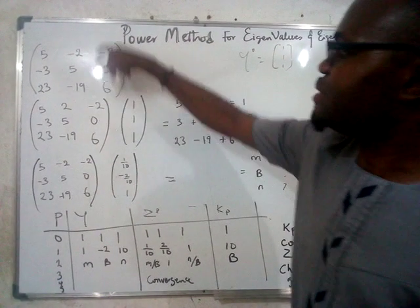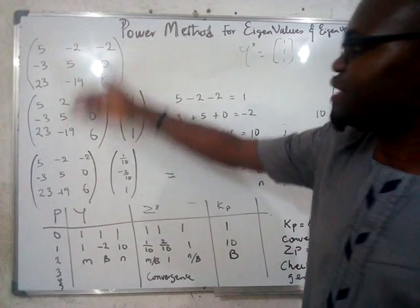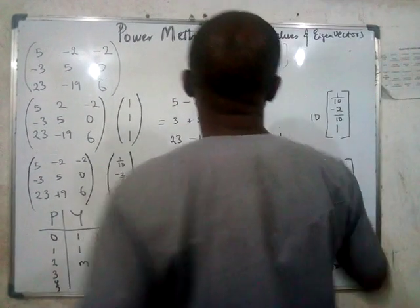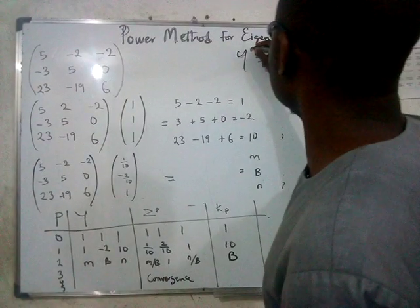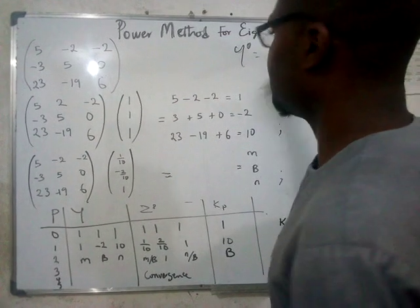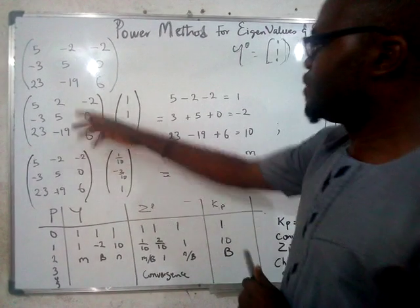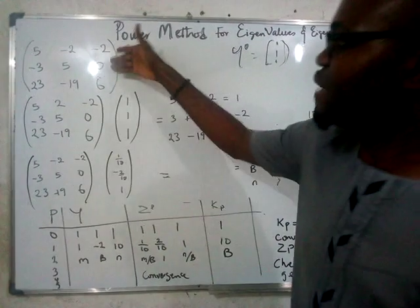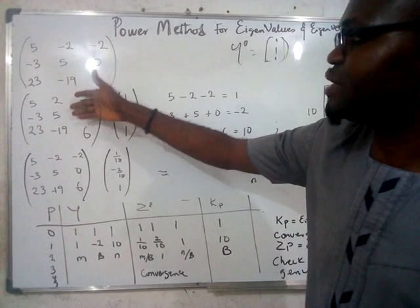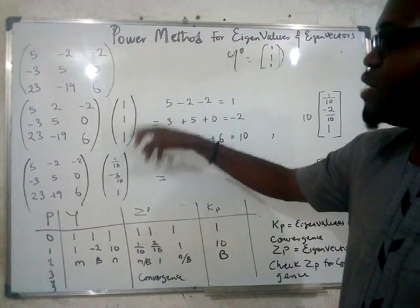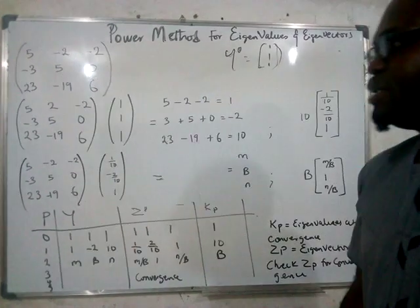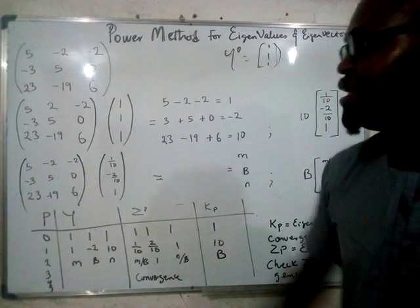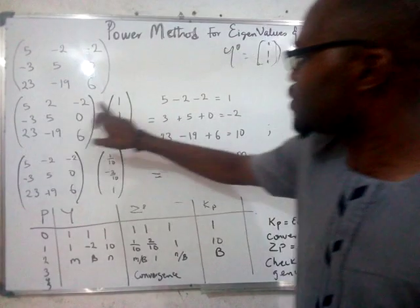...minus two. With this very matrix, the first thing you do is write the same matrix and assume initial y values. The initial y values we are assuming is one, one, one, one, one, one, so that we can multiply out to get values from our iterations. Write the same matrix exactly the way it is, then write a single column matrix with values one, one, one.